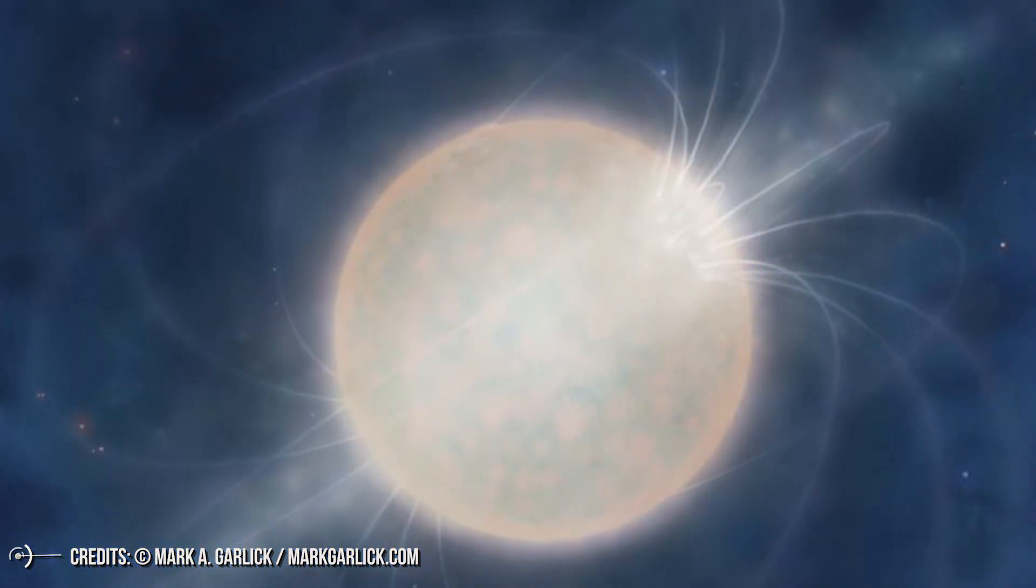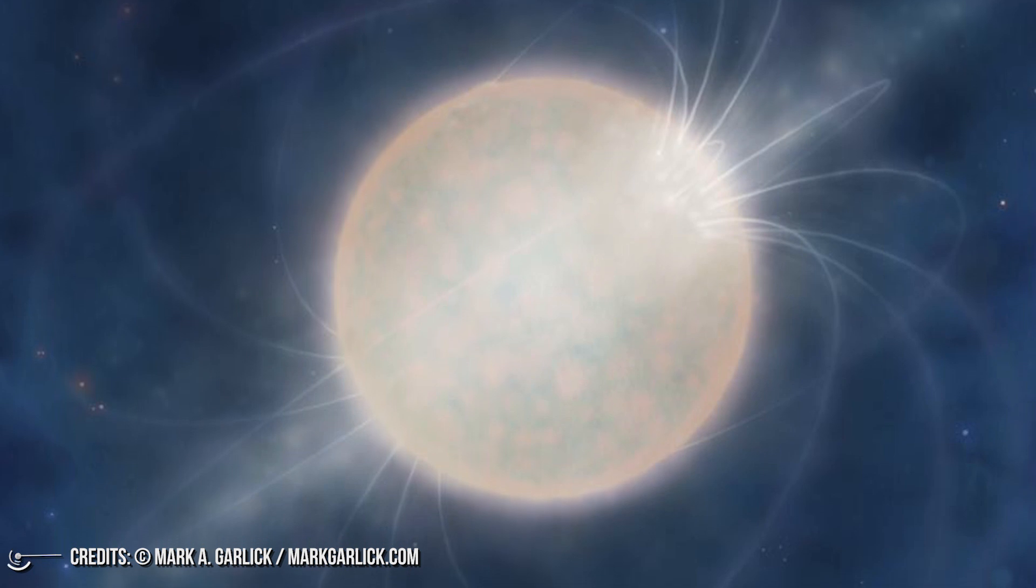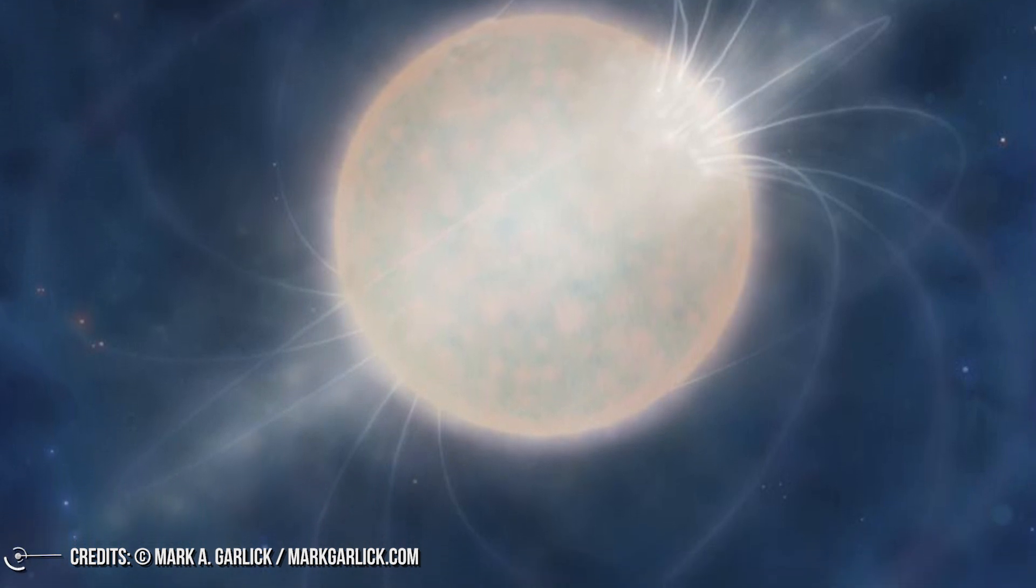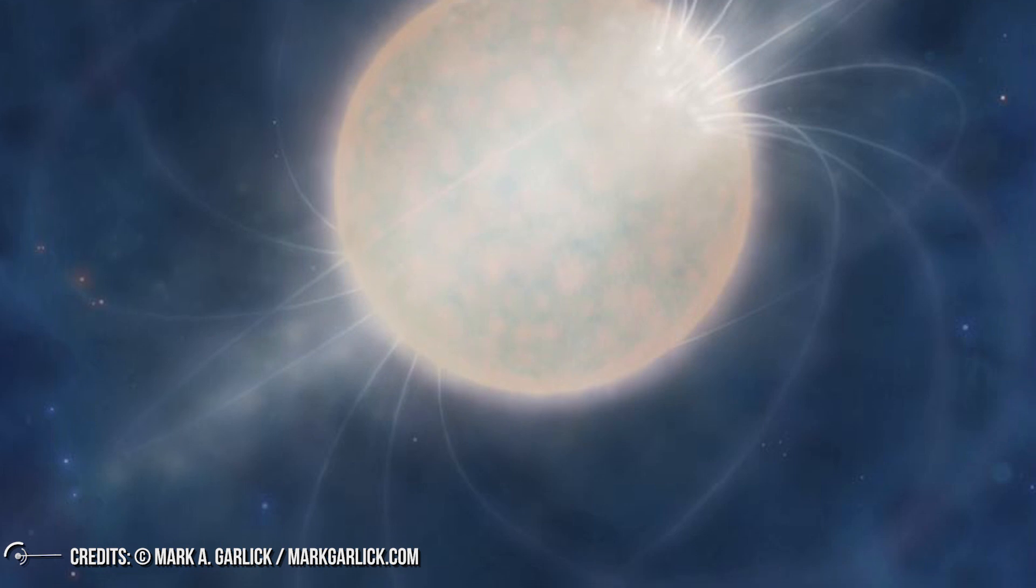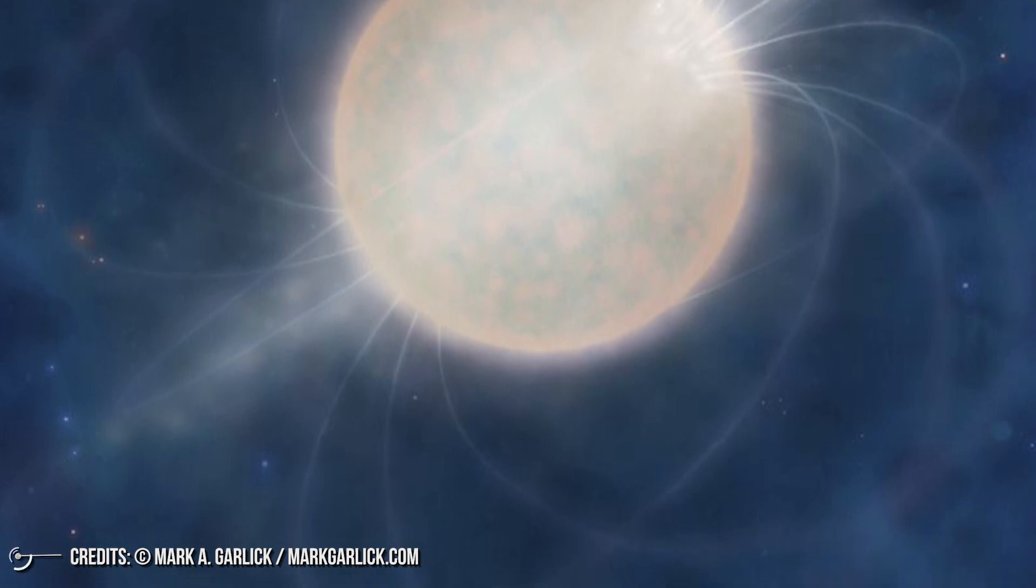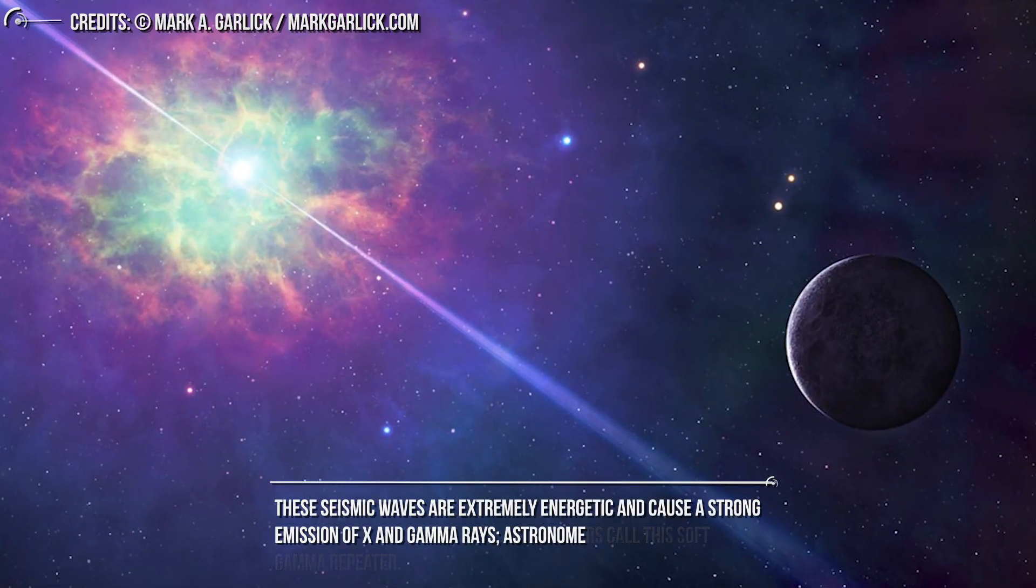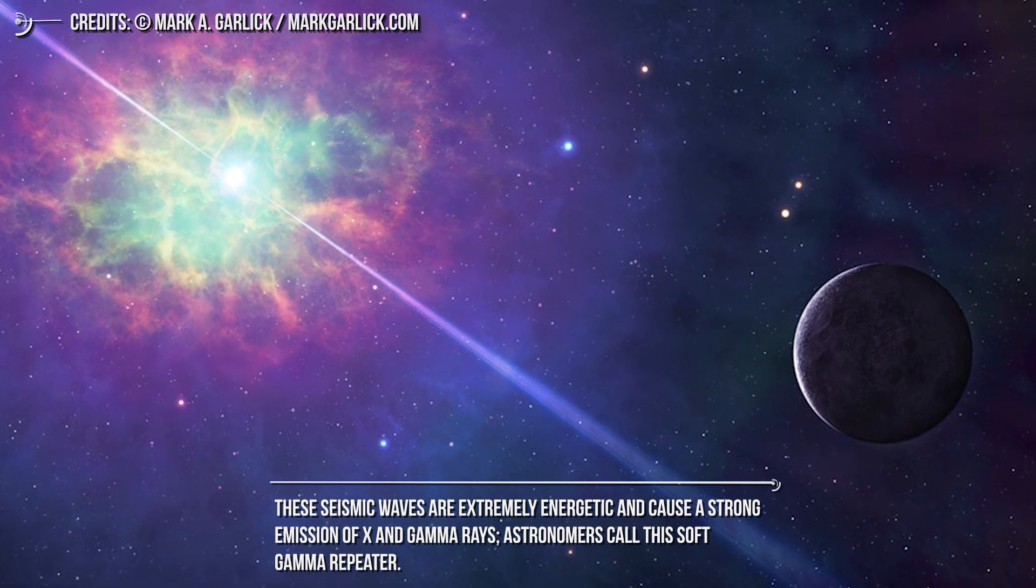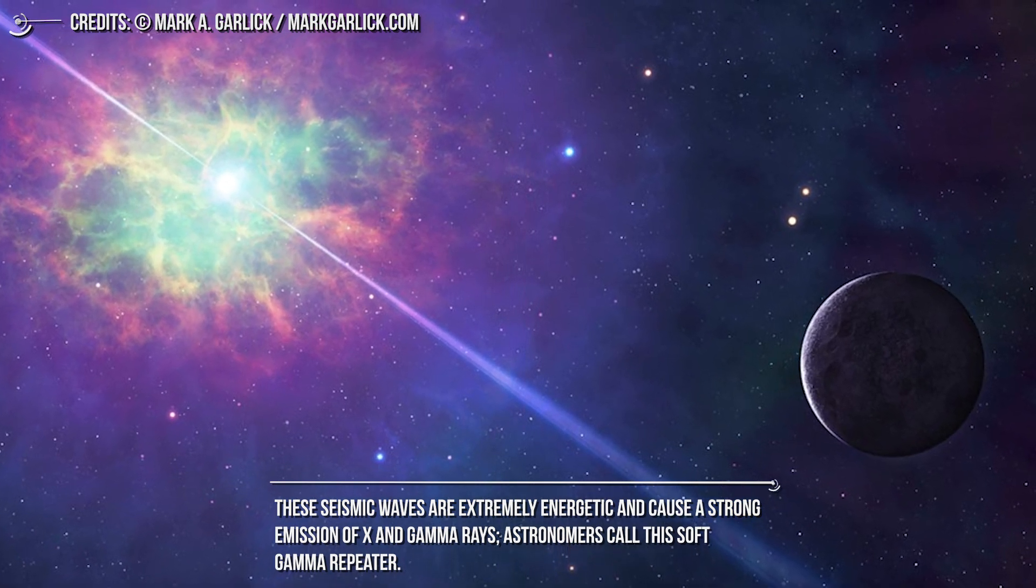That is, the crust of the neutron star is split by the intense magnetism and sinks into the inner layer, very similar to what happens to the Earth's crust during an earthquake. These seismic waves are extremely energetic and cause a strong emission of X and gamma rays.